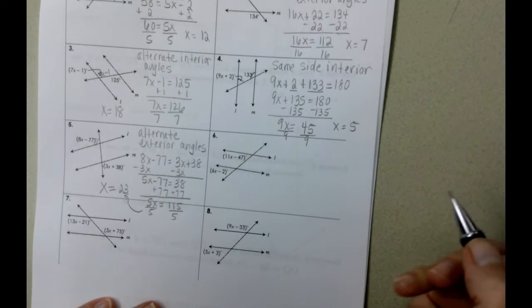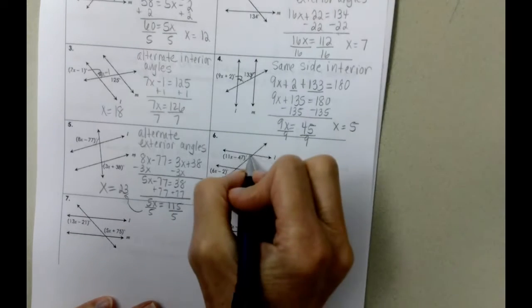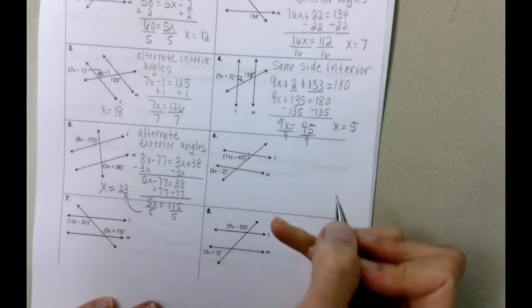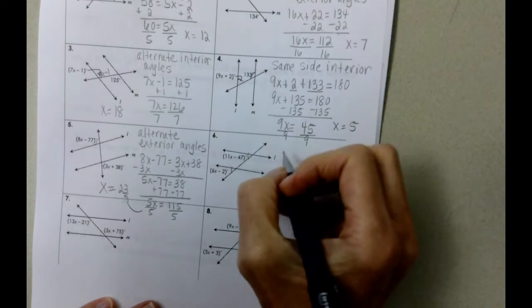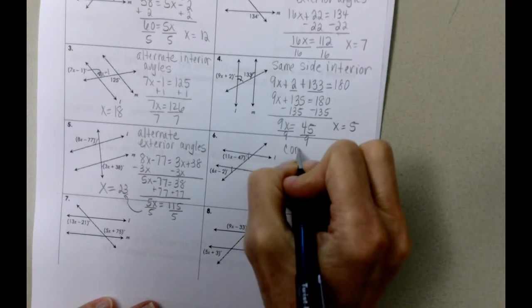If we take a look at problem number 6, 11X minus 47 is here. 6X minus 2 is here. So if you notice, both of those angles are underneath the parallel line and to the left. And we call those corresponding.